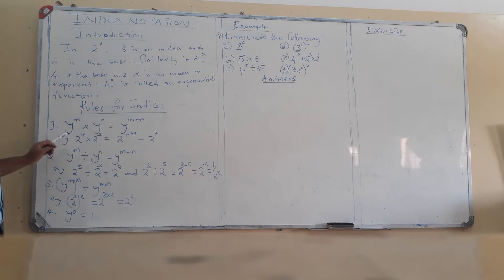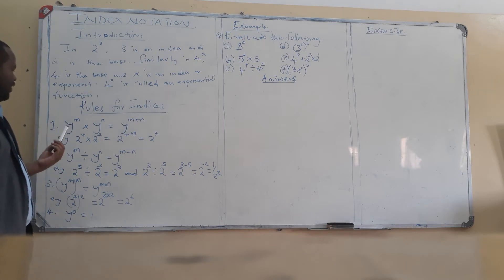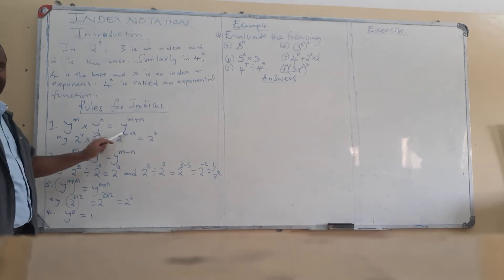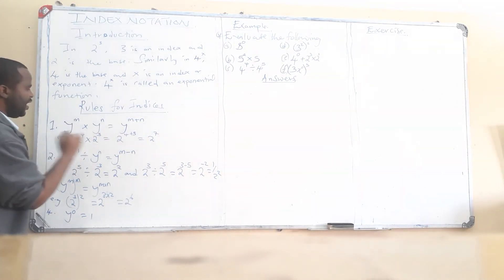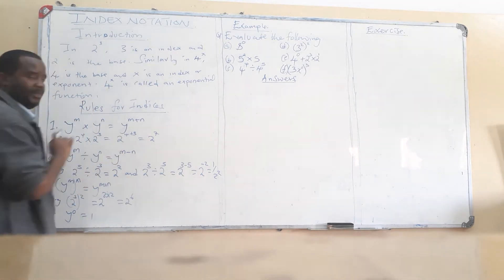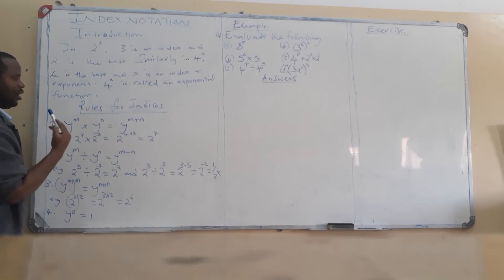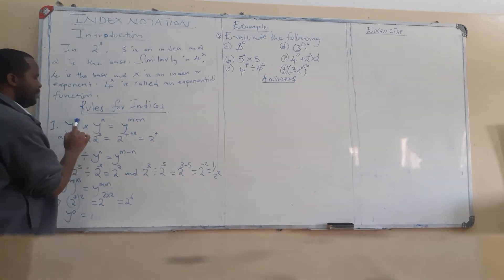The multiplication law says: if y to the power m is multiplied by y to the power n, what is the answer? If you are multiplying numbers with the same base, you keep the base but deal with the powers by adding them. So you keep the base and add the powers: the answer will be y to the power m plus n.